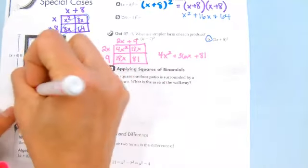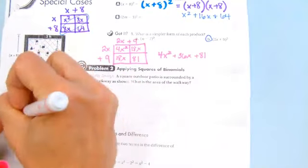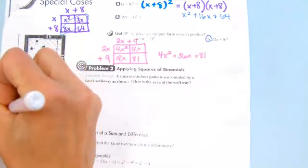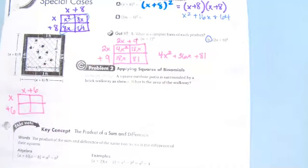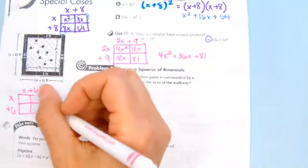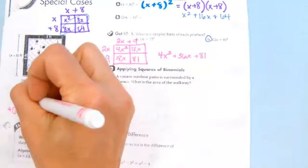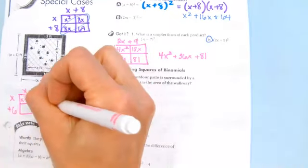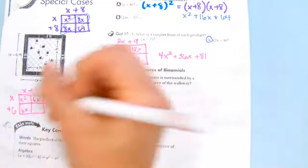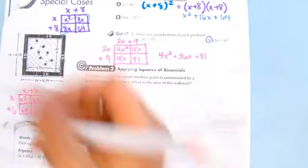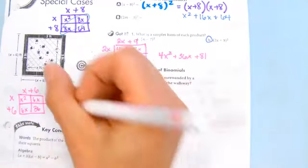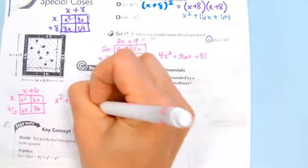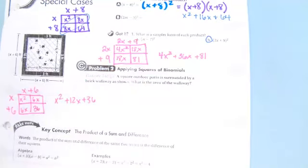x plus 6 times x plus 6. This gives me x squared. This gives me 6x. This gives me 6x because they're the same. And then this last one gives me 36. So I get x squared plus 12x plus 36 is the total.